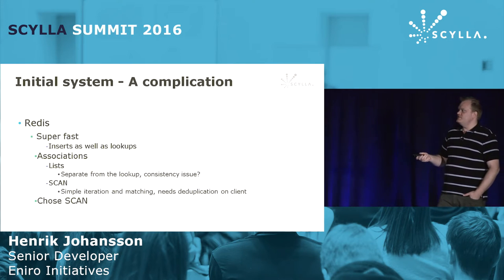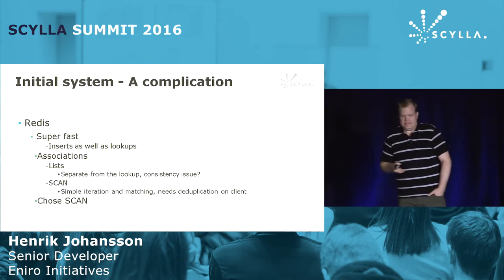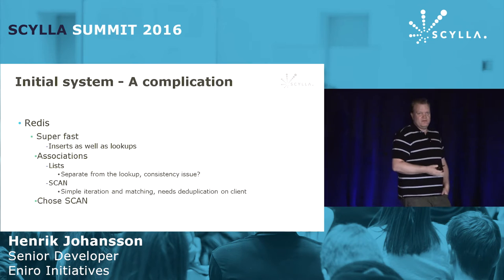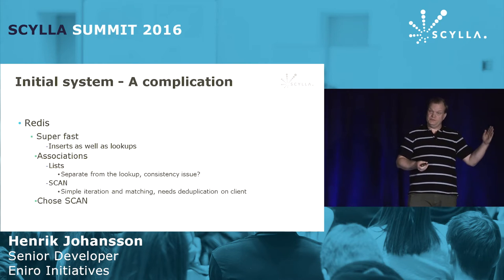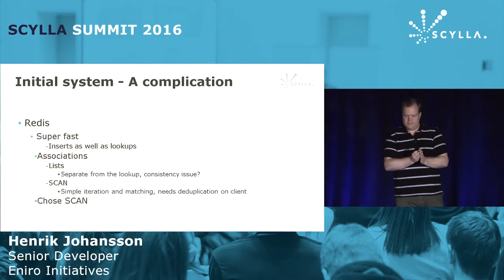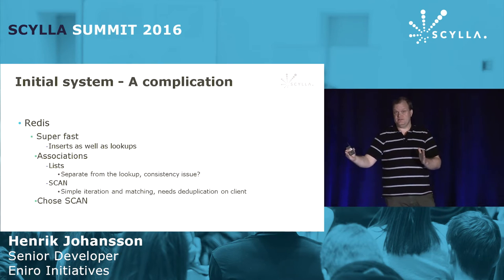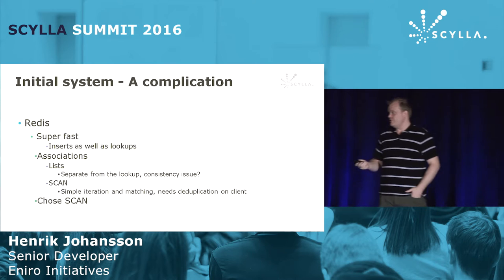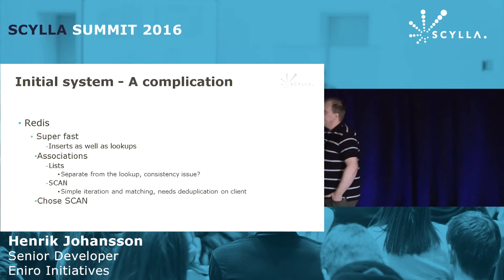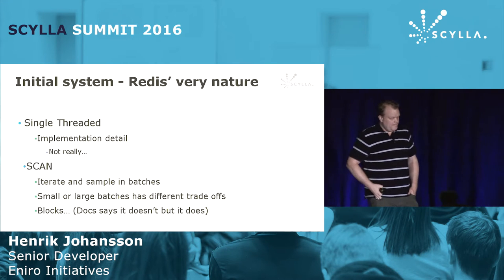Instead we used the SCAN command that Redis exposes in its API. It's a simple cursor-based iteration — you start from zero, read up to a thousand, then from a thousand to two thousand, and so on. That worked, at least, and it's the process we chose at that point.